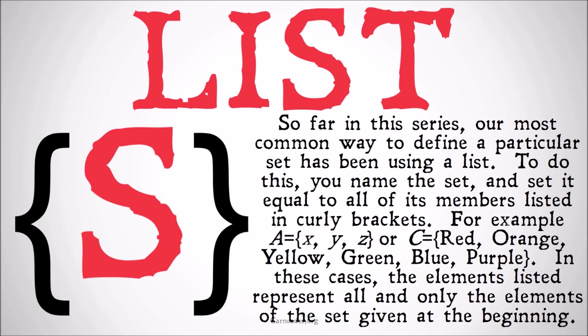So A equals {x, y, z} means that x, y, and z are all members of A and they are the only members of A. C equals {red, orange, yellow, green, blue, purple} means that red, orange, yellow, green, blue, and purple are all members of C, and there are no other members of C. By listing all the members of a set, you have expressed that these are all members of the set and these are the only members of the set.